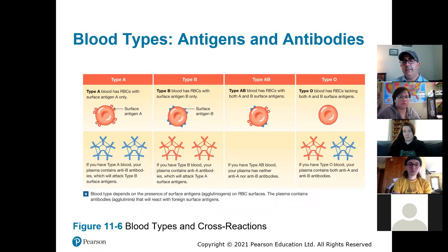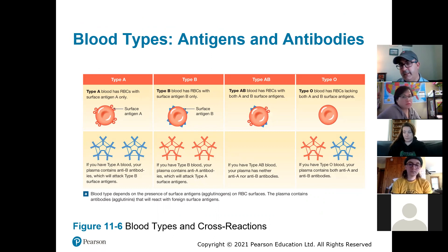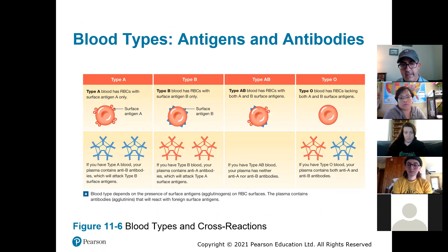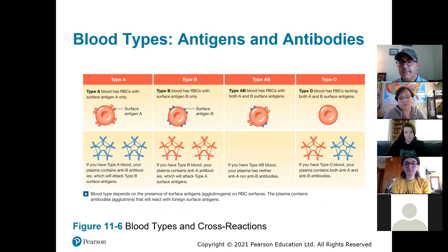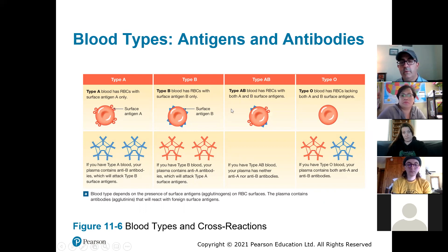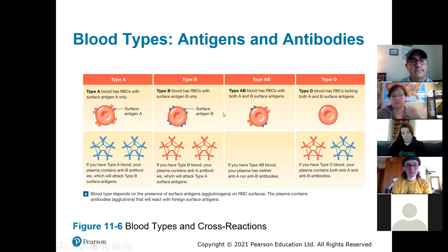Now we're going to get to blood typing. On the surface of red blood cells — and on the surface of most of your cells — there are these markers called antigens. Antigens are like little flags or markers on the outside of the cell; they're there to let your immune system know what that cell is. On your red blood cells you can have the type A antigen, the type B antigen, both the A and B antigens, or no antigens at all.